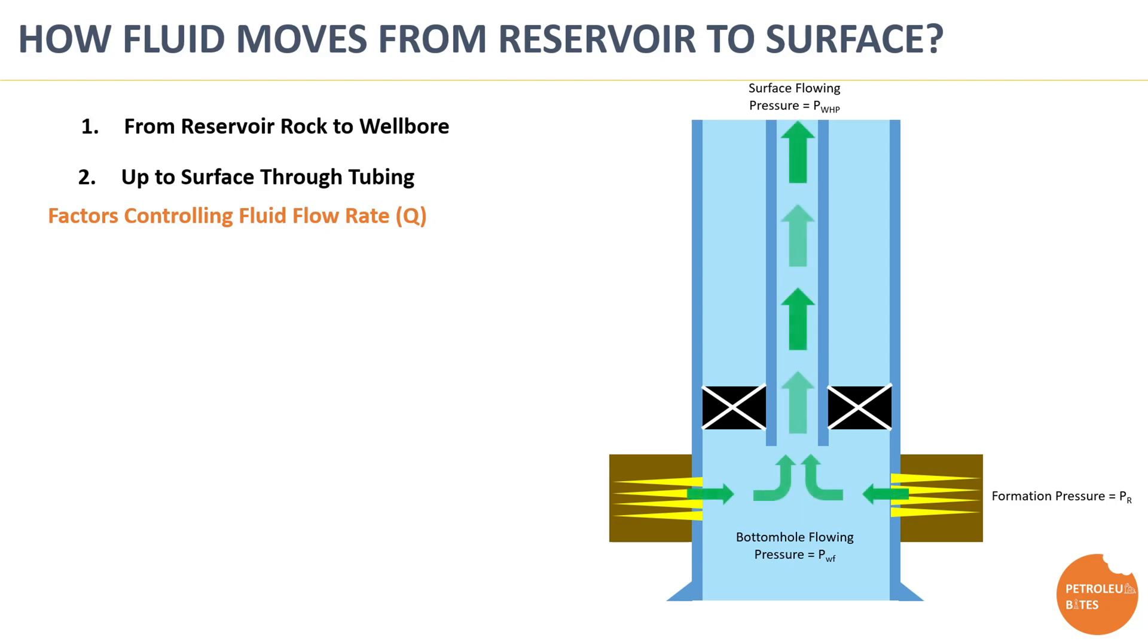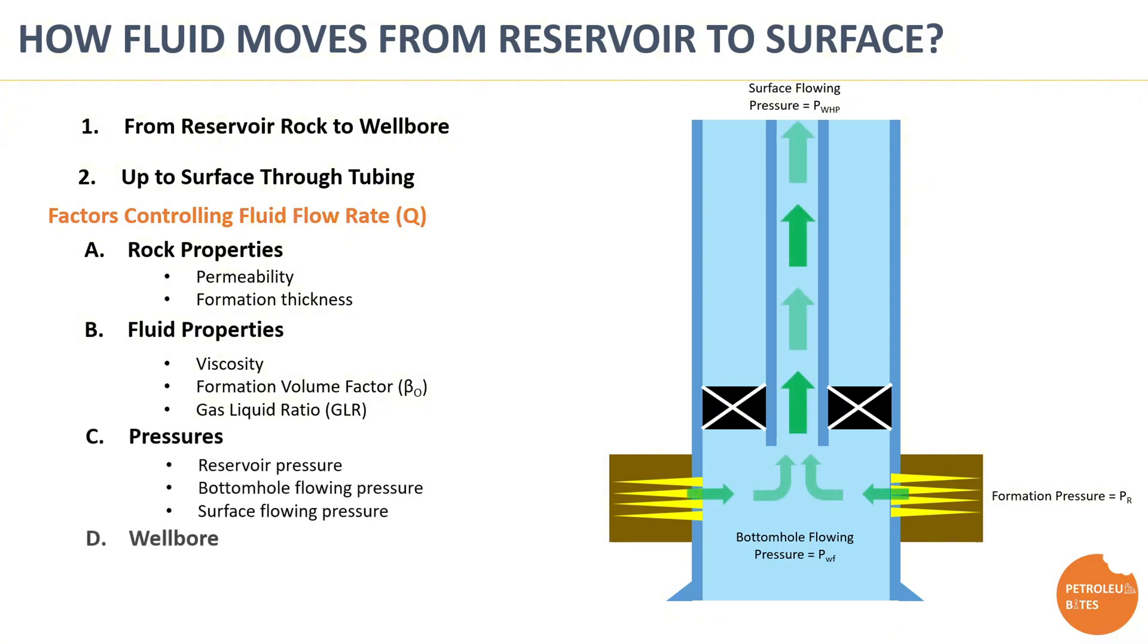There are many factors that govern the flow rate of produced fluid from reservoir to the surface, like the rock properties such as permeability value and net pay thickness, in addition to reservoir fluid properties such as viscosity, formation volume factor, and gas-liquid ratio. The different pressure values and wellbore geometry play a critical role in controlling fluid rate and in determining well capability to produce naturally or to require installation of one of the artificial lift methods.